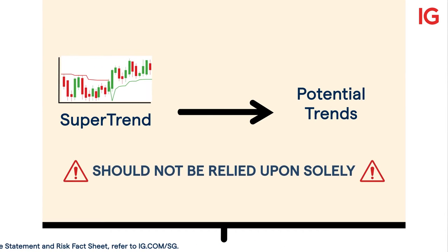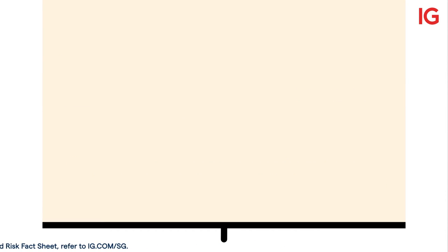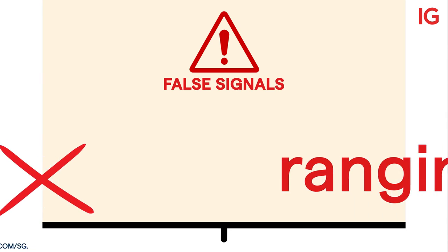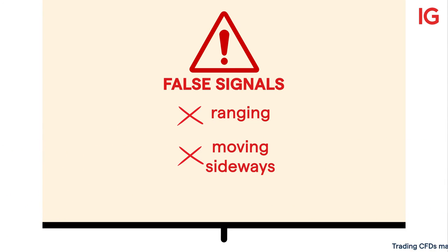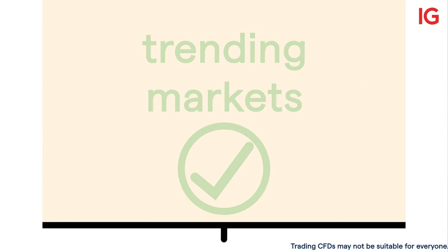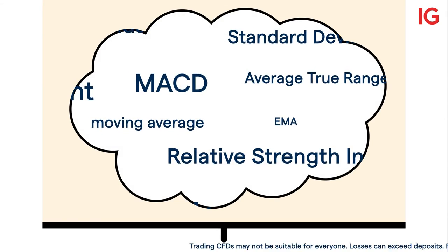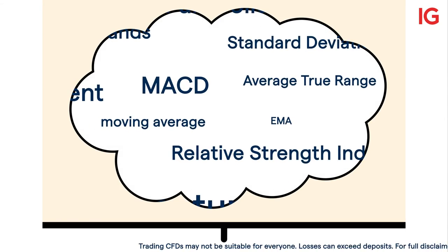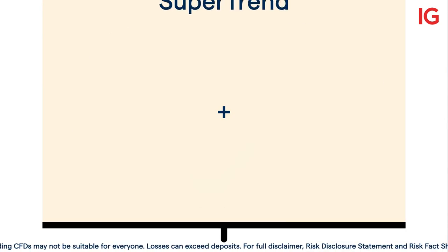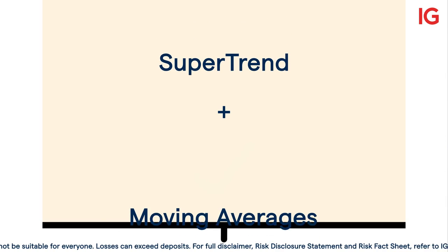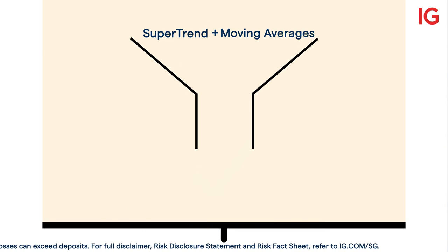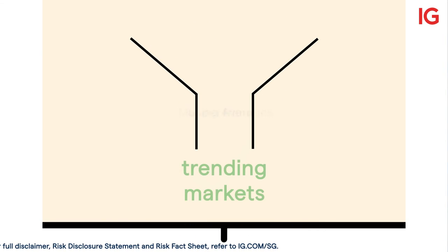It's important to note that while supertrend can be a useful tool in identifying potential trends, it should not be relied upon solely. It may provide false signals when the market is ranging or moving sideways, and works best in trending markets. Traders should use other technical indicators and analysis techniques to confirm their trading decisions, such as complementing supertrend with an indicator like moving averages to better filter out trending markets.